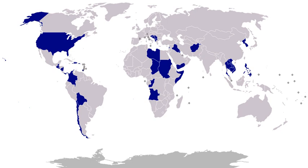1813–1814, Marquesas Islands, French Polynesia: U.S. forces built a fort on the island of Nuku Haiva to protect three prize ships which had been captured from the British. 1814, Spanish Florida: General Andrew Jackson took Pensacola and drove out the British forces. 1814–1825, Caribbean: engagements between pirates and American ships or squadrons took place repeatedly, especially ashore and offshore about Cuba, Puerto Rico, Santo Domingo, and Yucatán.